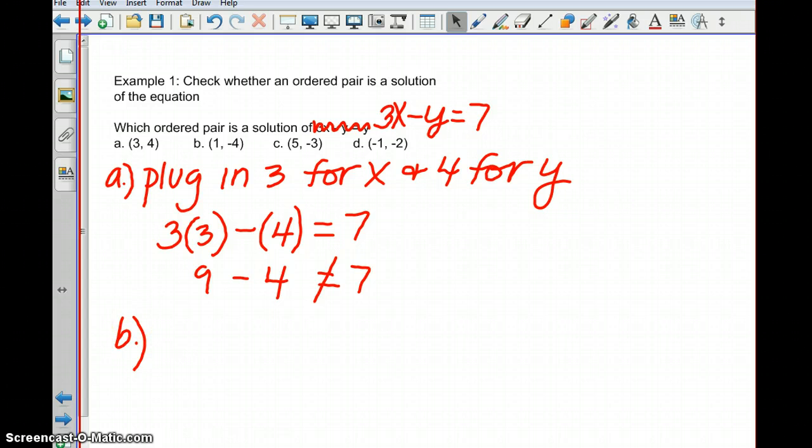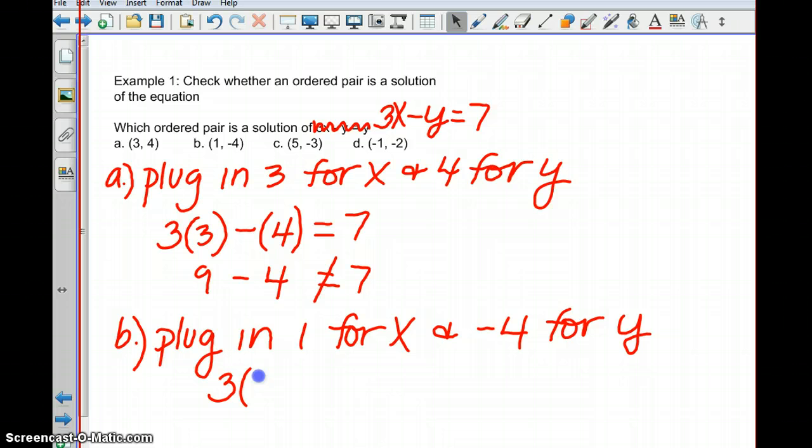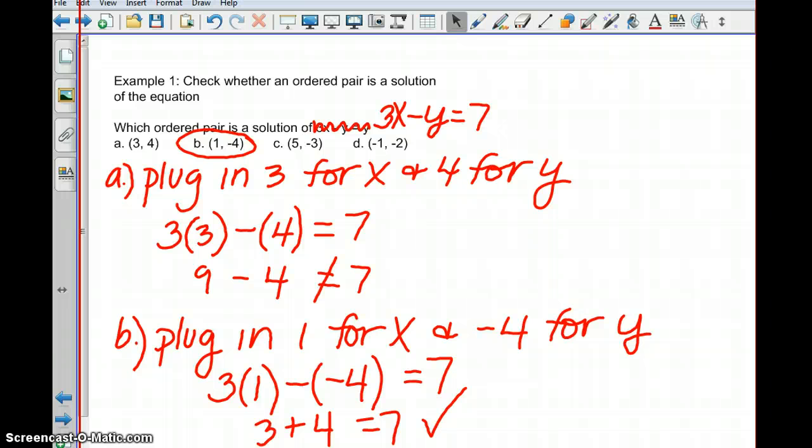We'll do the same thing with the next option, with the next choice. In this case, we're going to plug in 1 for x and negative 4 for y. So once again, we take the original equation. We replace the x with 1 and we replace y with negative 4. We want to see if this produces a true statement. So we have 3 times 1 is 3 minus negative 4, which really means plus 4. And does 3 plus 4 equal 7? Yes, it does. So in fact, b, the point (1, -4), is a solution to the equation. When we plug it in, it produces a true statement.